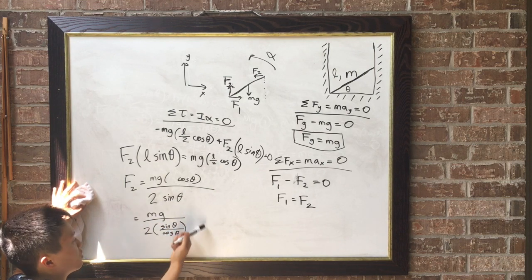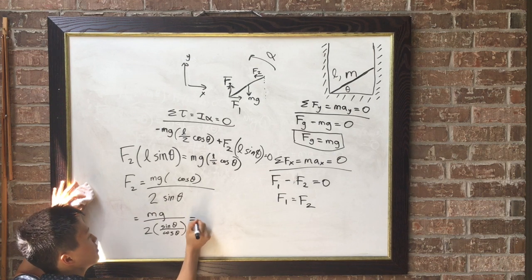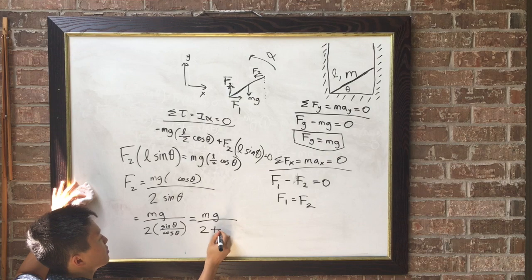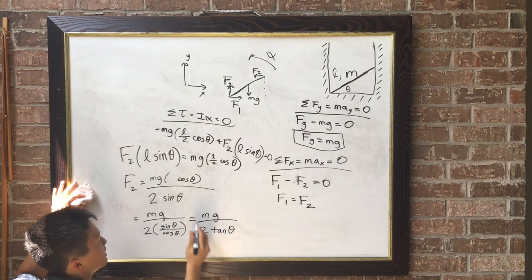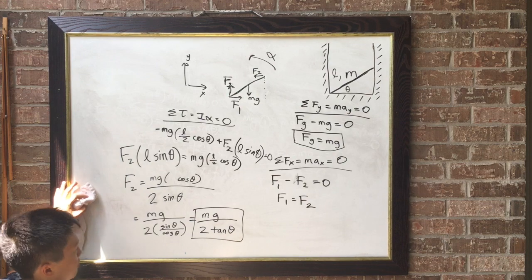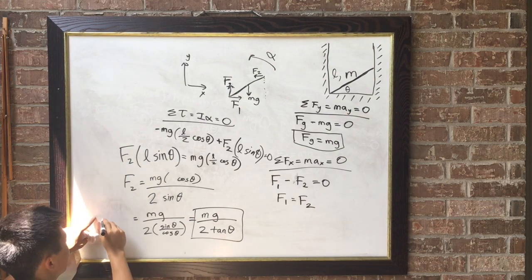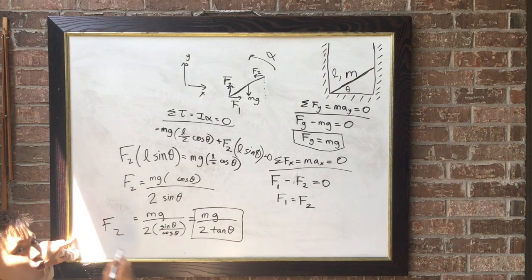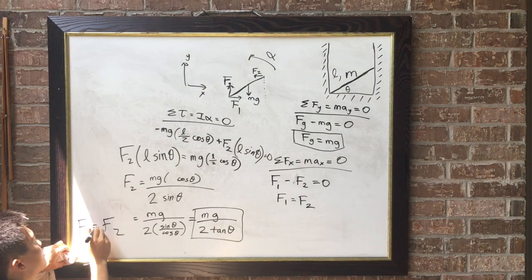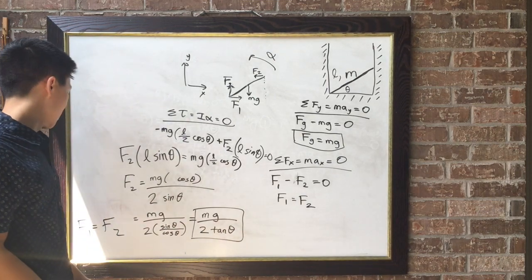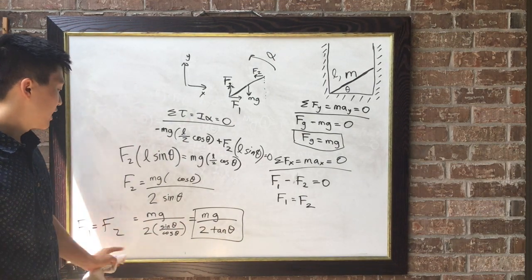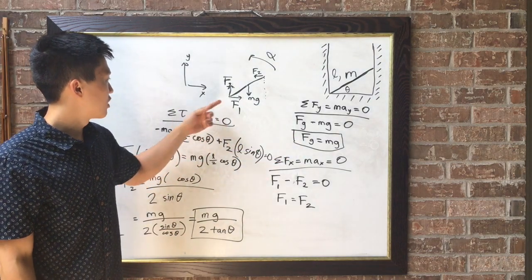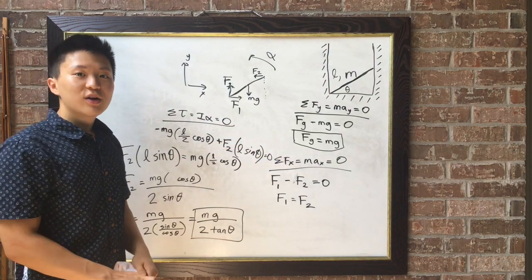Since this cosine theta would go up like that. So really, F sub 2 equals this in its simplest form. So F sub 2 equals this. And we solved for F sub 1, F sub 2, and F sub g, which is the normal force caused by the ground. And there you have it.